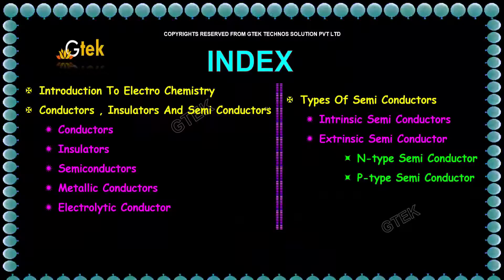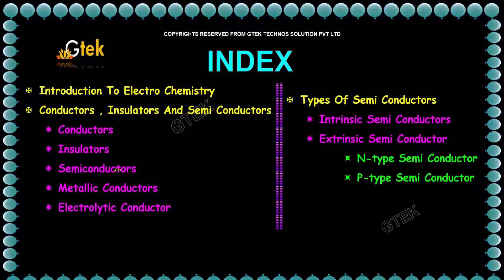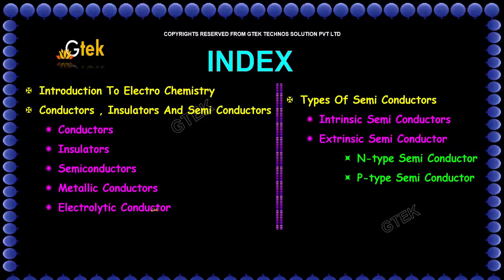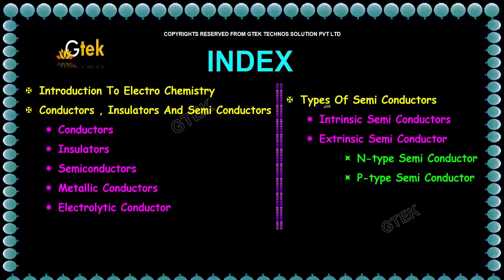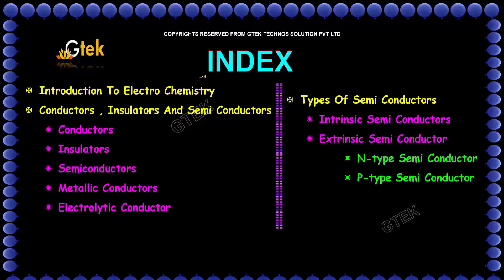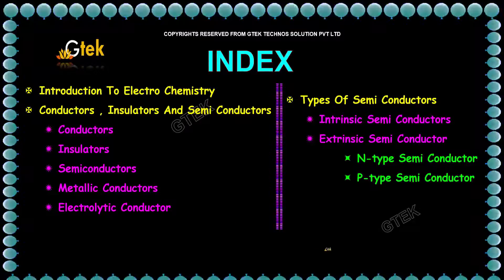Here is the index. I am going to talk about the electrochemistry introduction — conductors, inductors, semiconductors, metallic conductors, electrolytic conductors. We are also going to see the types of semiconductors: one is intrinsic, the other is extrinsic, under the N-type and P-type of semiconductors. These areas we are going to look into.